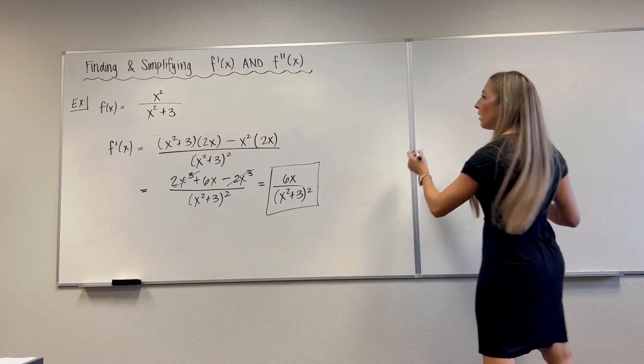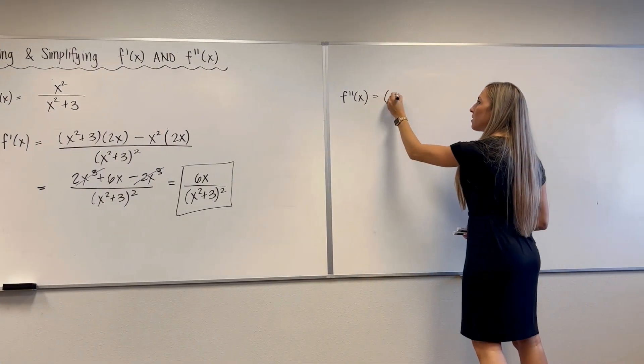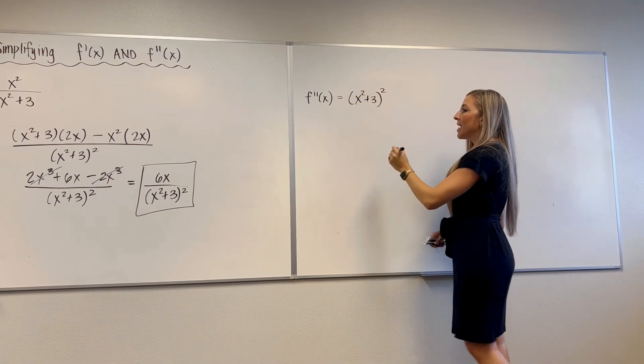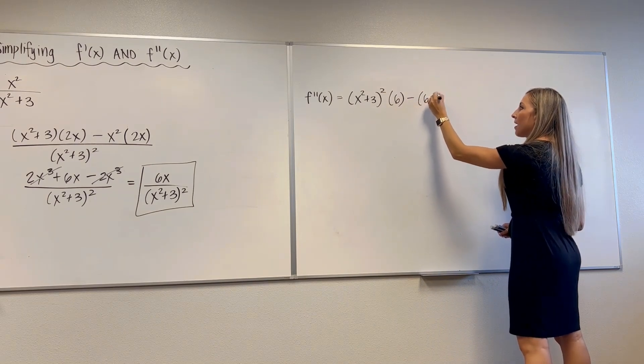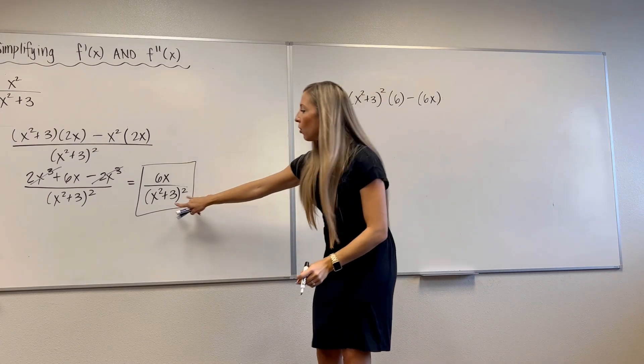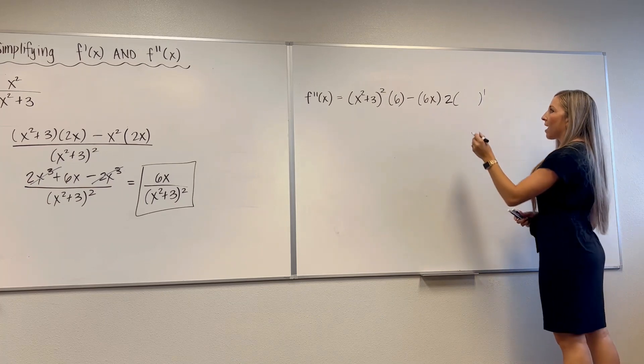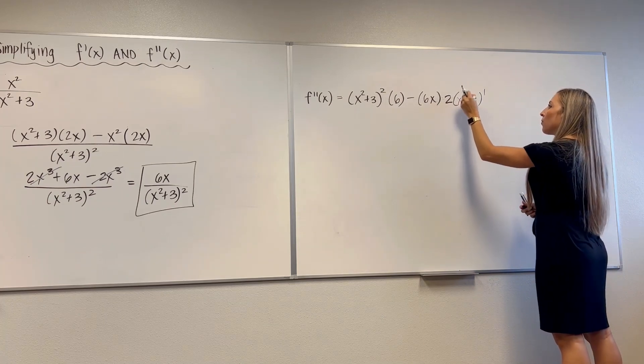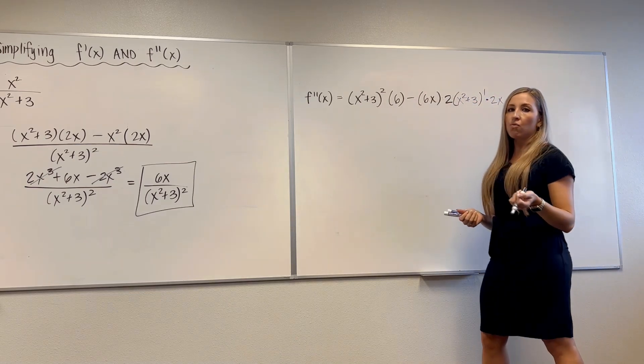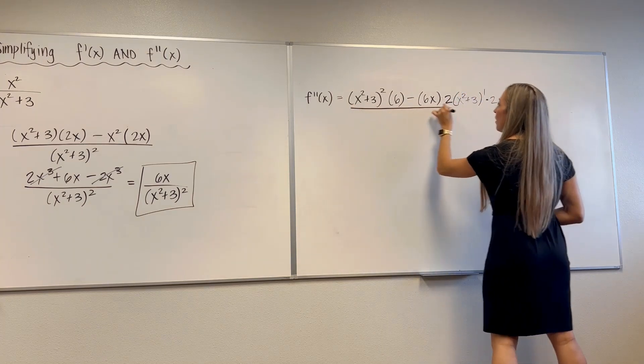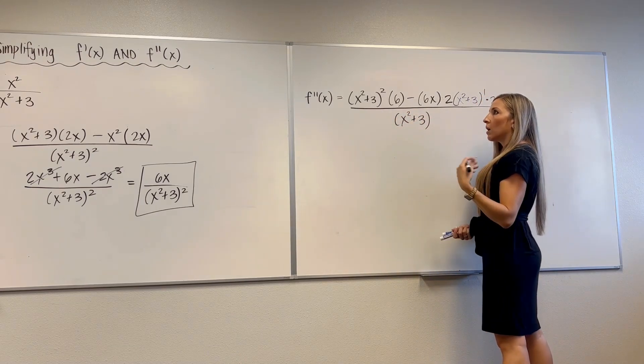f double prime time. So here we go. Low d high. So low, leave the denominator alone. D high, derivative of the numerator is 6. 6x, derivative of 6x is 6, minus high, d low. So we need to use the chain rule. Bring the 2 in the front. Don't touch what's inside just yet. Subtract 1 from the exponent. Now, rewrite what's inside, and then multiply by its derivative. If you need a chain rule review, I'll link it right here. Over, low, low. So that would be x squared plus 3 squared squared to the fourth.